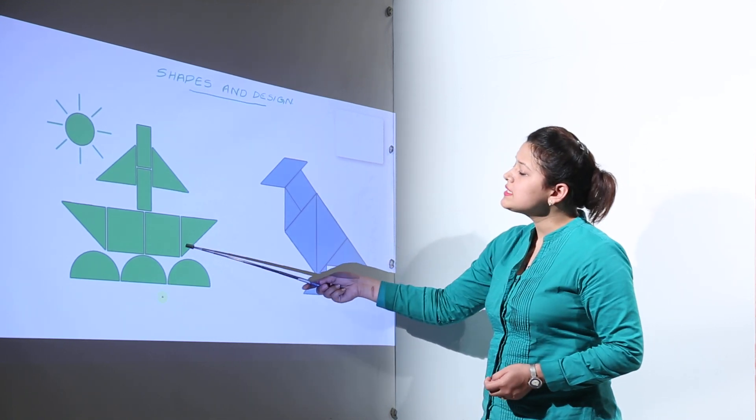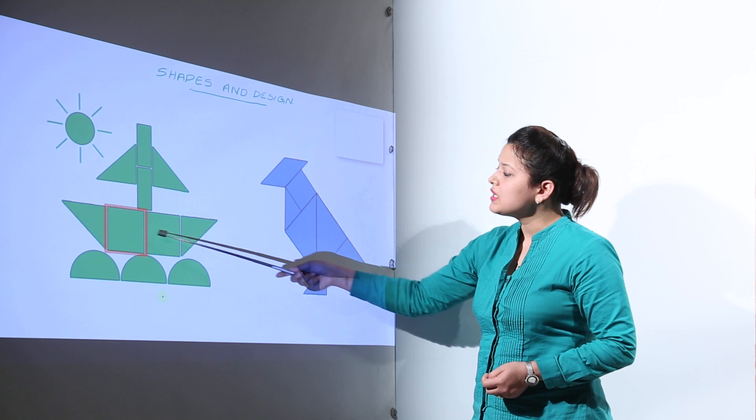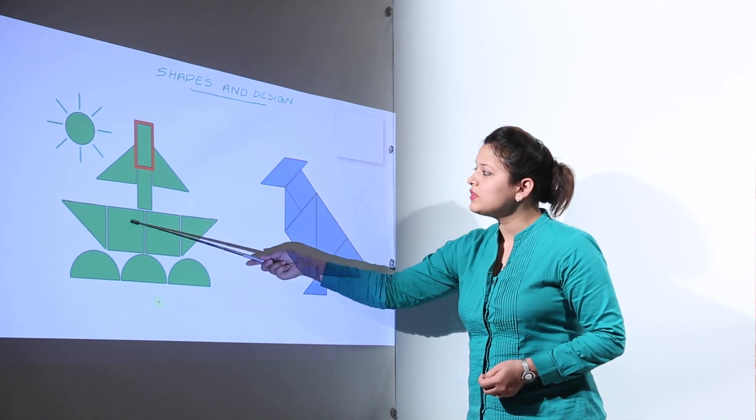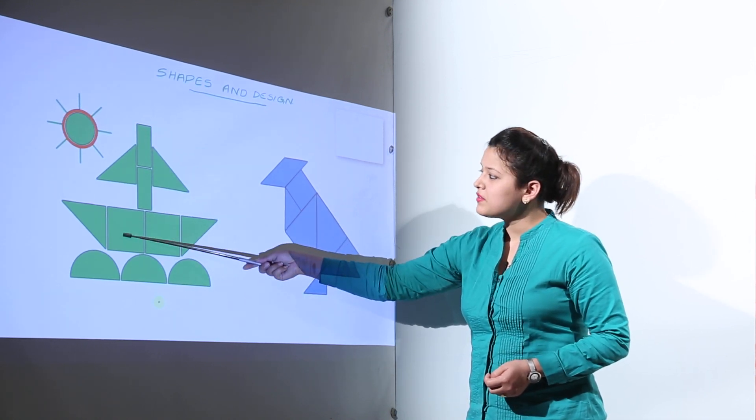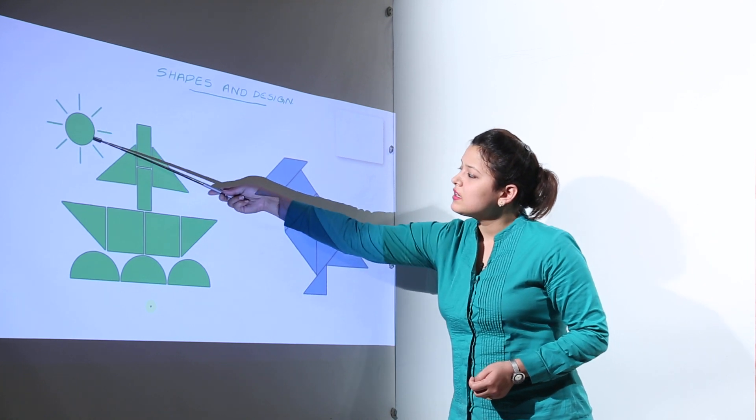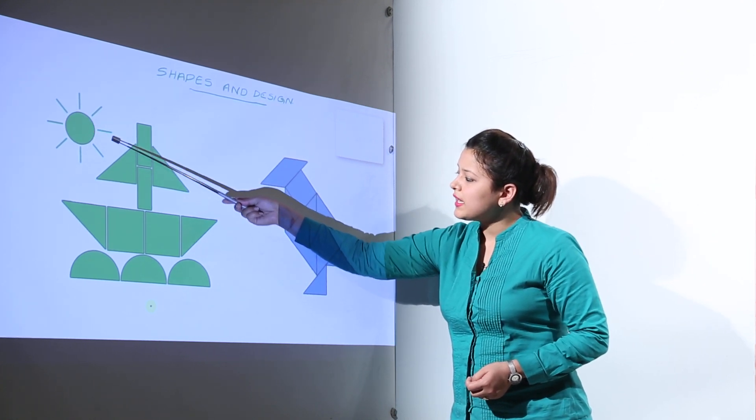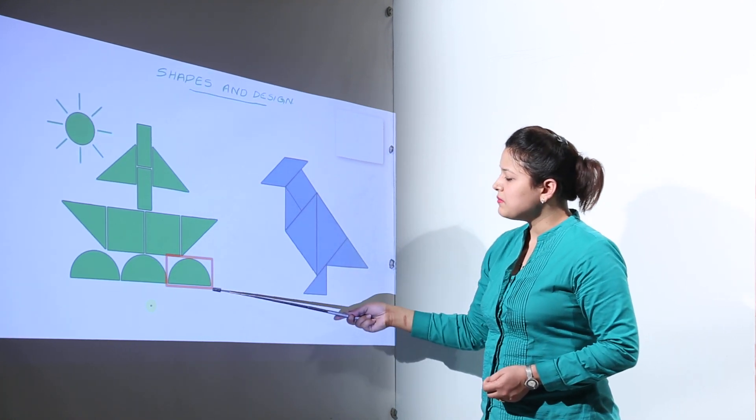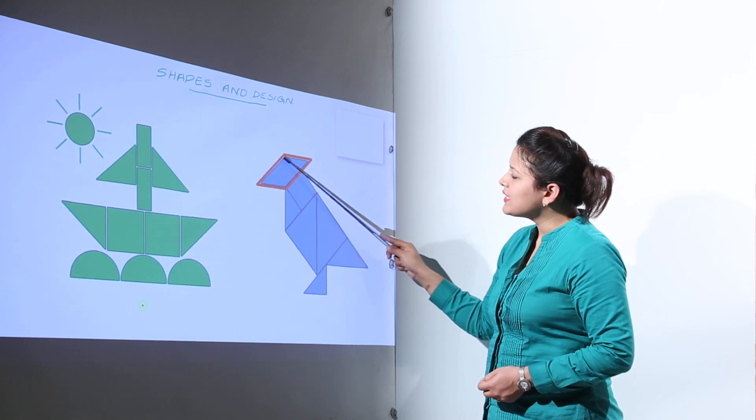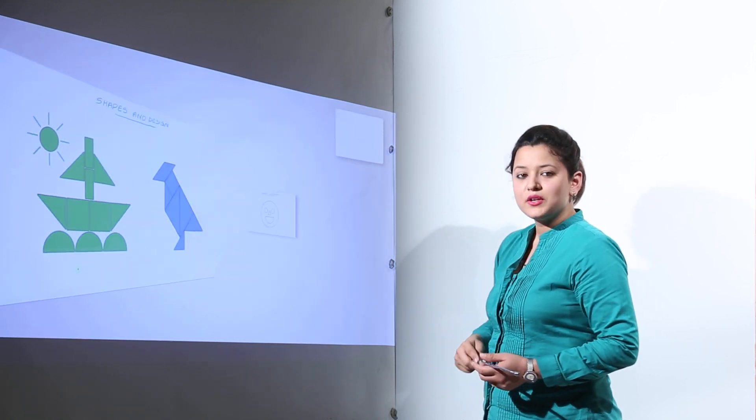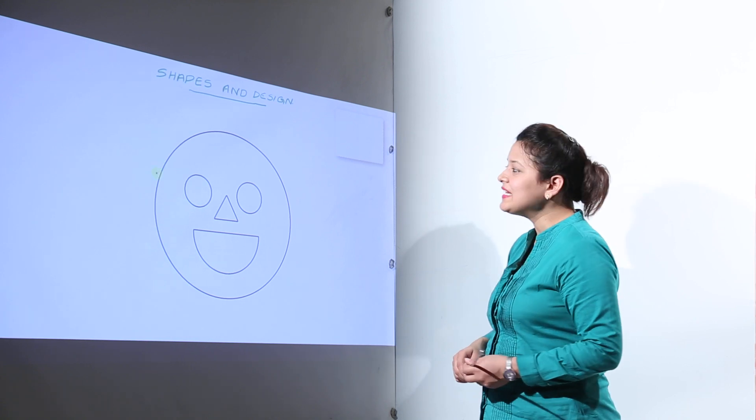Now we have this shape made. We have to check the shape of the tangrams. Here we have a square, rectangle, a circle, a straight line. We can see a semi circle here. Over here we can see a parallelogram. So we have different shapes in the tangram tiles.